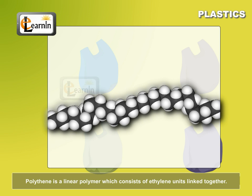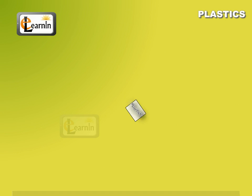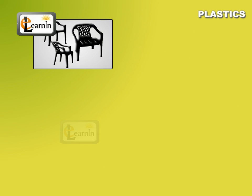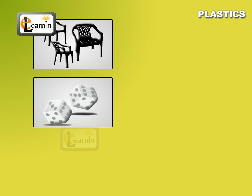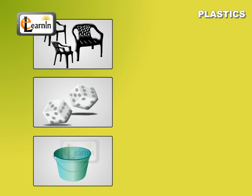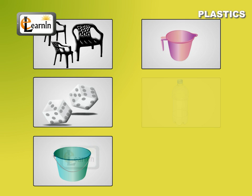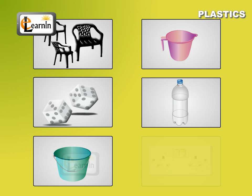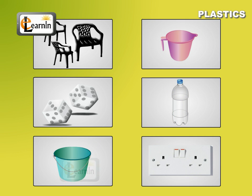Polythene is a linear polymer which consists of ethylene units linked together. Plastic articles like chairs, toys, buckets and mugs are household items used in day-to-day life.